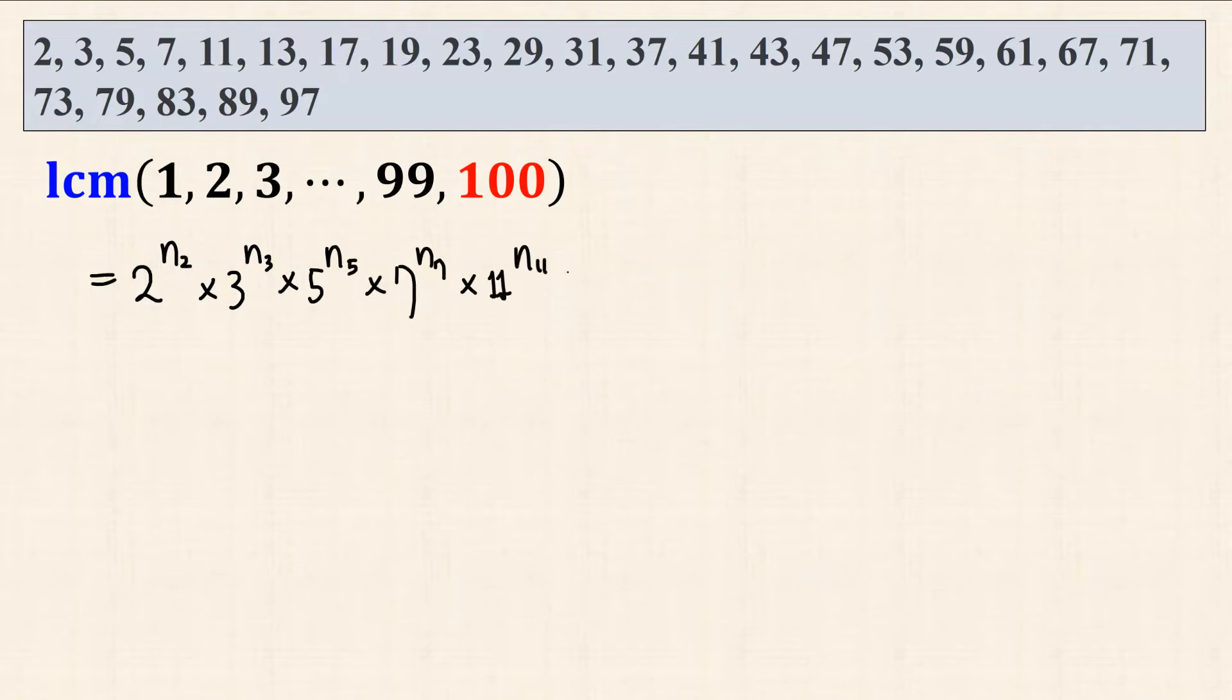then 11, then 13, all the way up to the last prime number, 97 to the power of some natural exponent 97.